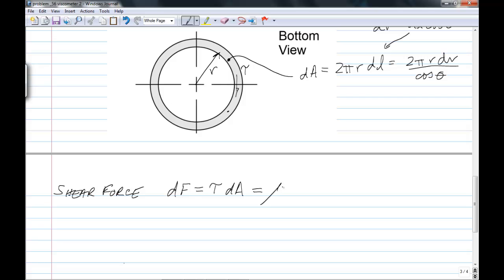And you can see dA there. So we have mu omega over tan theta. And then for dA, 2 pi r over cos theta. But we can note that tan theta equals sin theta over cos theta. And so if we make that substitution, you can see that the cos thetas are going to cancel.